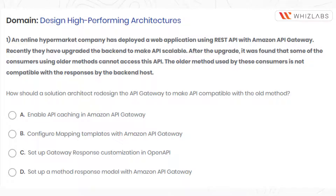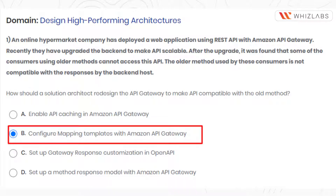The older method used by these consumers is not compatible with the responses by the backend host. How should a solution architect redesign the API Gateway to make the API compatible with the old method? The answer is option B: configure mapping templates with Amazon API Gateway.